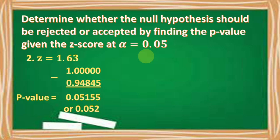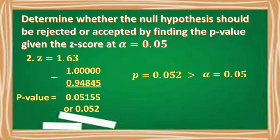Comparing our p-value of 0.052 to our alpha level of 0.05, the p-value is greater than the alpha level. Therefore, our decision is to accept the null hypothesis.